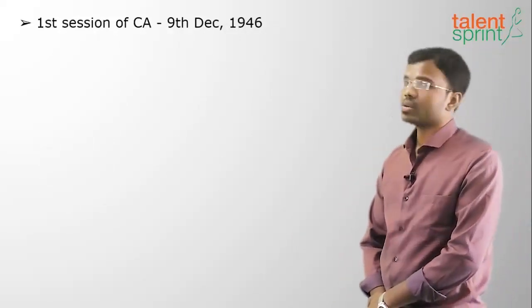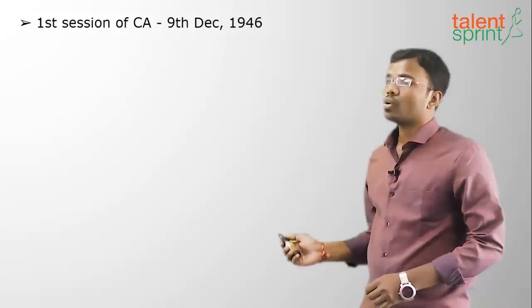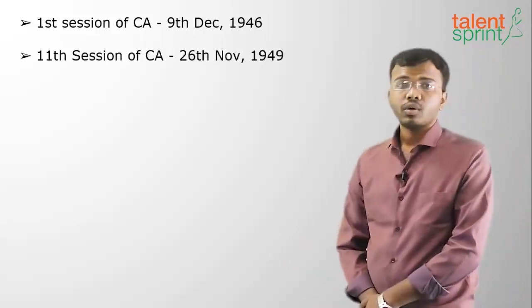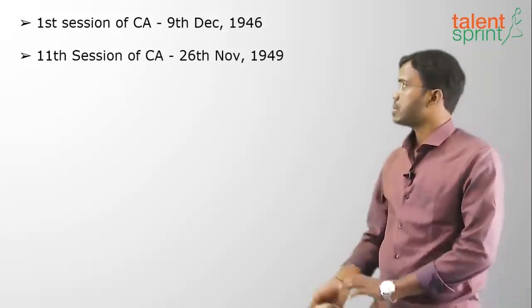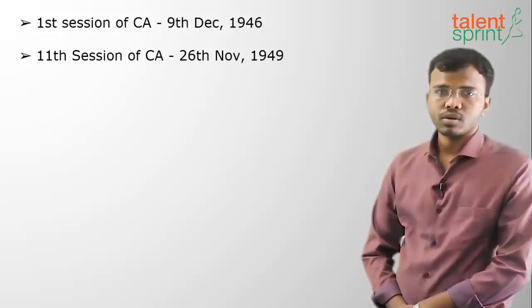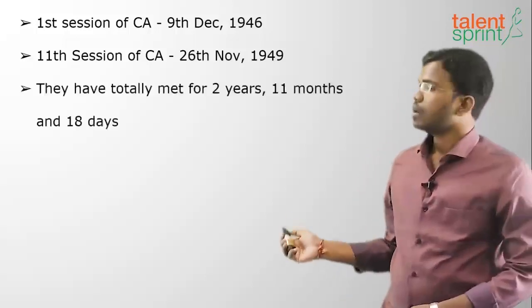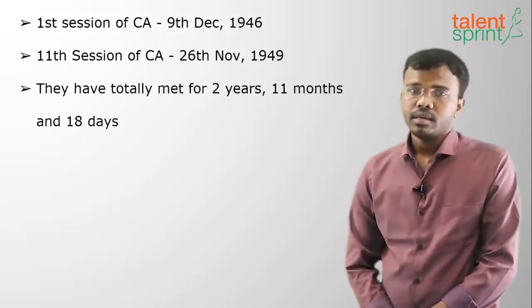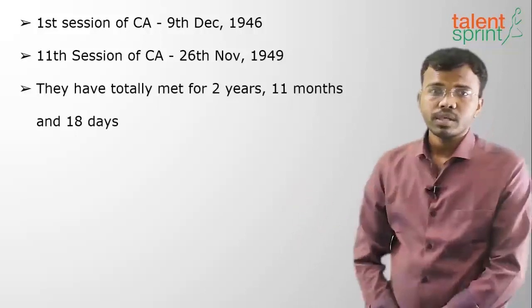The first session of the Constituent Assembly was held on 9th December 1946. Totally it had 11 sessions, with the 11th session ending on 26th November 1949. The entire process took two years, 11 months, and 18 days.